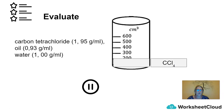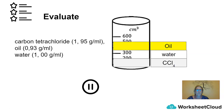We'd find carbon tetrachloride at the bottom because it has a density of 1.95 g/ml. Then we'd find water, which has a density of 1.00 gram per ml. Then we'd have oil, which is the lightest of all of them with a density of 0.93 grams per ml.